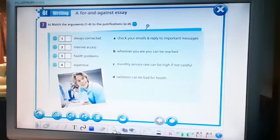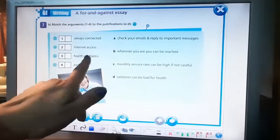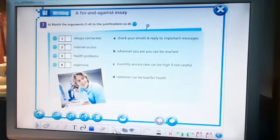Let's proceed with number 7. Match the arguments to the justification. It is your work. You are going to do them. They are going to help you mainly in order to create the arguments, or as we said them, the advantages and disadvantages into your topic. So you are going to connect number 1, 2, 3, 4 with A, B, C, and D.